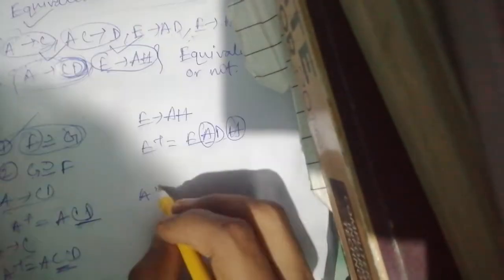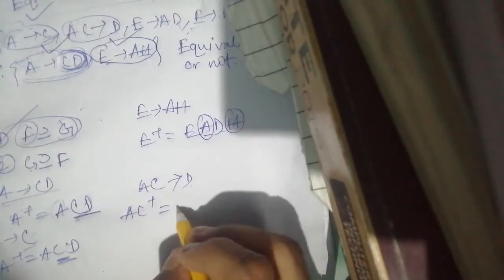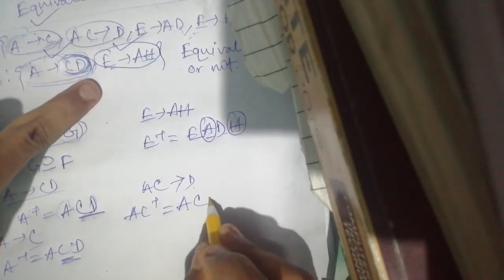Now let's check the second condition: whether G is a superset of F. We take each dependency in F and check whether it can be derived from G. First, check A determines AC. We compute A+ in G. A determines CD, so A+ includes A, C, D. C is present, so this is satisfied. Next, check AC determines D. We compute AC+ in G: A determines CD, so AC+ is ACD, and D is present. This is also satisfied.